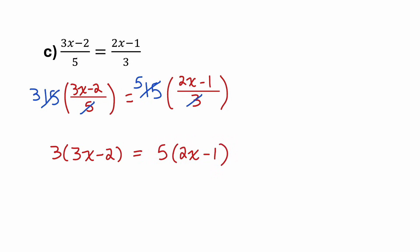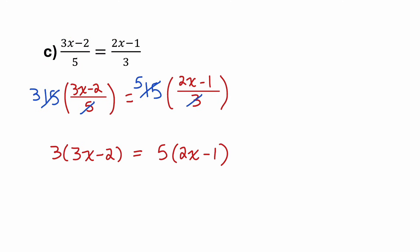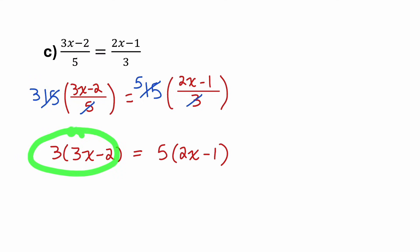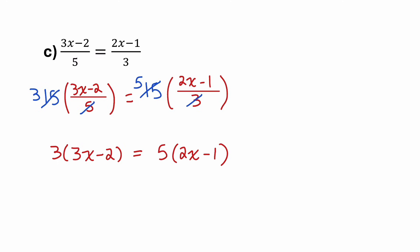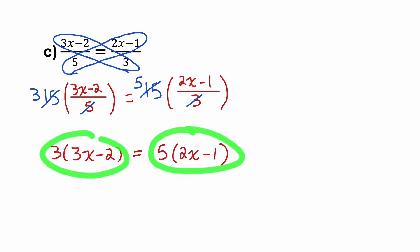You might notice what happened: if we have a fraction equal to a fraction, when we multiply both sides by a common denominator, one side ends up with the product of the denominator of the right and the numerator of the left, and the other side has the product of the denominator of the left with the numerator of the right. We can create those two sides by multiplying 3 and 3x minus 2 together, and 5 and 2x minus 1 together.